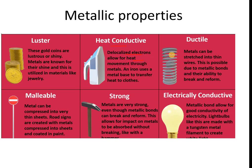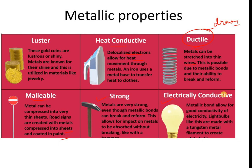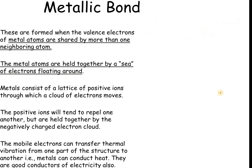Metals are ductile, meaning they can be drawn into wires. Malleable means you can hammer the metal without it breaking and shape it into different sheets or pots. To remember the difference: ductile — drawn into wires; malleable — can be hammered into shape. Metals are also strong and good electrical conductors, which will be discussed in more detail.